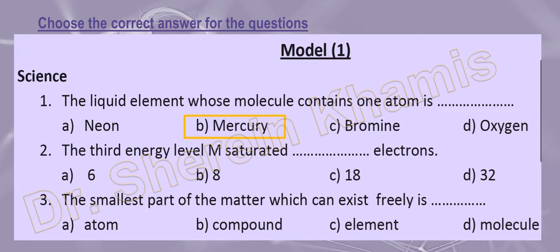The third energy level M saturated with what number of electrons? According to the rule 2n², we have the first energy level: replace n with 1, so 2 × 1² = 2 electrons. Second energy level: 2 × 2² = 8 electrons. M is the third energy level, so 2 × 3² = 18 electrons.